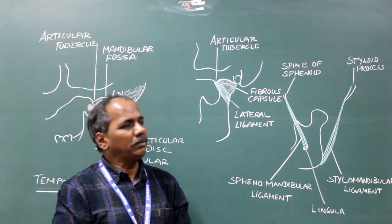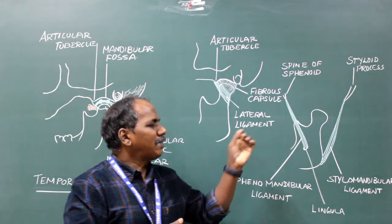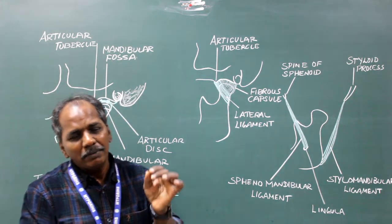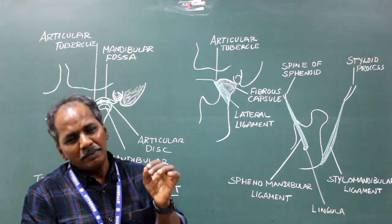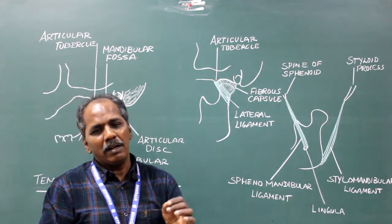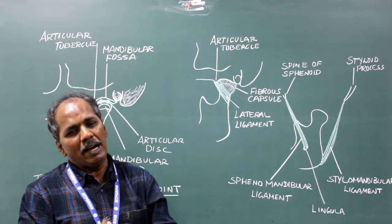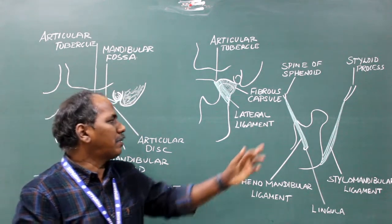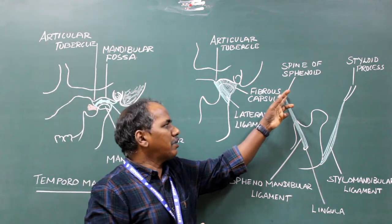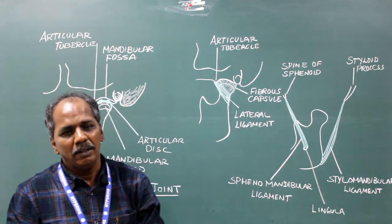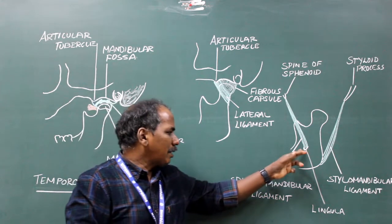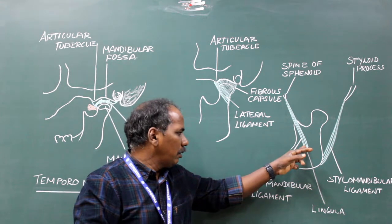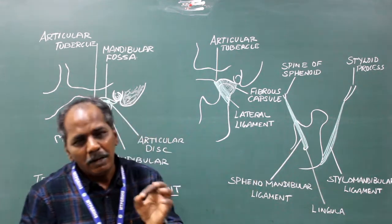Spinomandibular ligament. It is the remnant of the un-ossified middle portion of the sheath of Meckel's cartilage, derived from the first pharyngeal arch. Attachment: proximally, it is attached to the spine of sphenoid; distally, it is attached to the lingula of the mandible and also to the margins of the mandibular foramen.